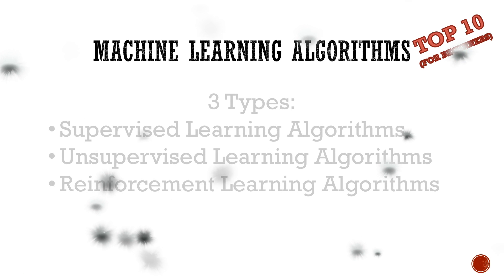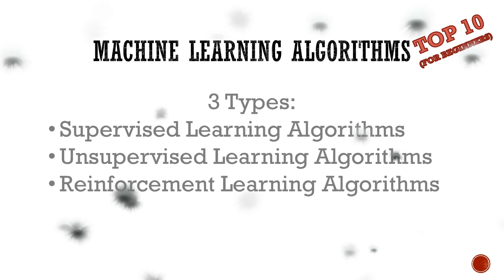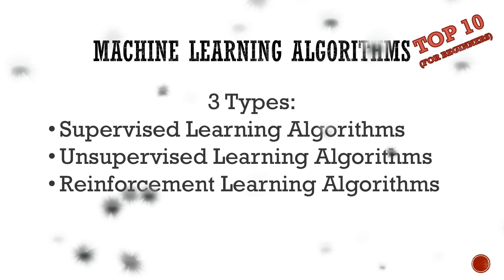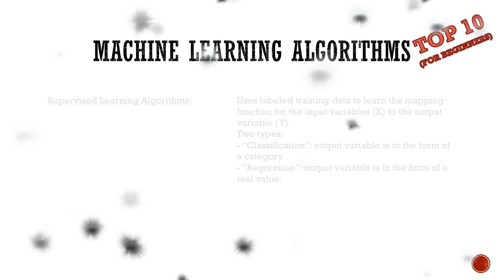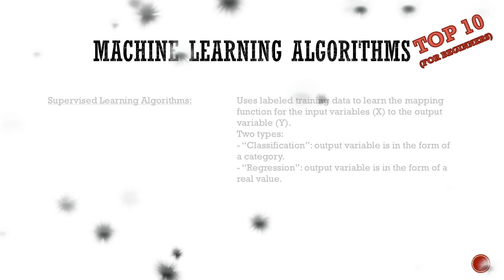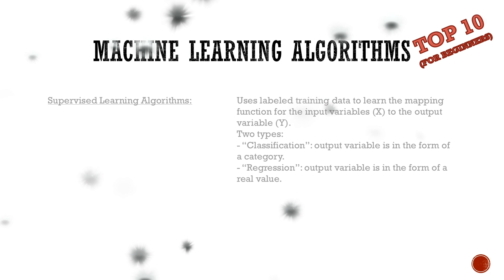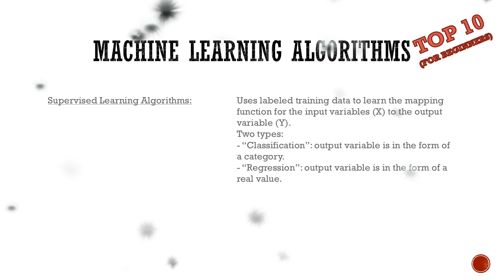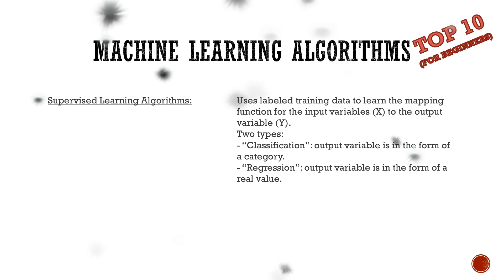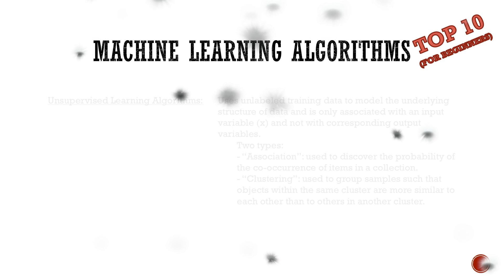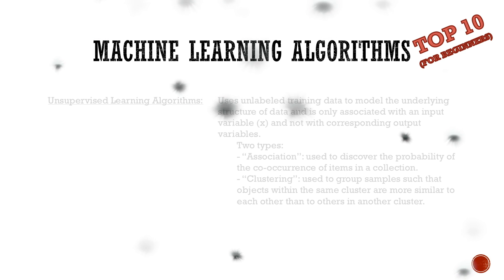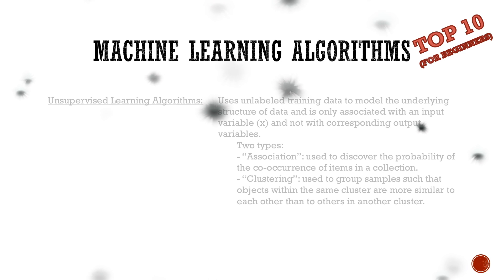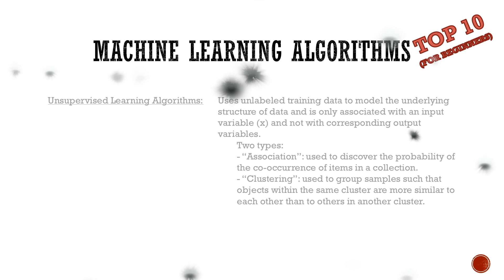There are three types of machine learning algorithms: supervised learning algorithms, unsupervised learning algorithms, and reinforcement learning algorithms. Supervised learning algorithms use labeled training data to learn the mapping function from the input variable to the output variable. There are two types of supervised learning problems. In classification problems, the output variable is in the form of a category such as male/female or healthy/sick, while in regression problems, the output variable is in the form of real values such as height or weight. Unsupervised learning algorithms use unlabeled training data to model the underlying structure of data and are only associated with an input variable, not with a corresponding output variable.